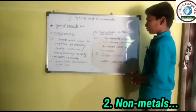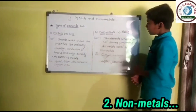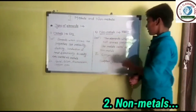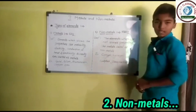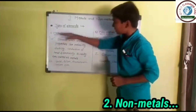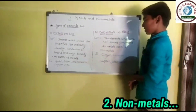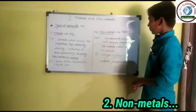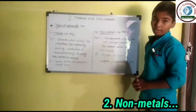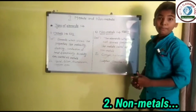Non-metals means adhatu. The elements which cannot show properties like metals are called as non-metals. Examples of non-metals are oxygen, hydrogen, sulfur, phosphorus, etc.